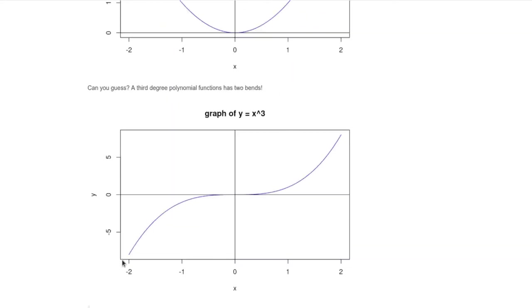A third degree polynomial, it's not surprising there's two bends. Do you see them there? There's one bend. It's a bending down. And this piece is a bending up.